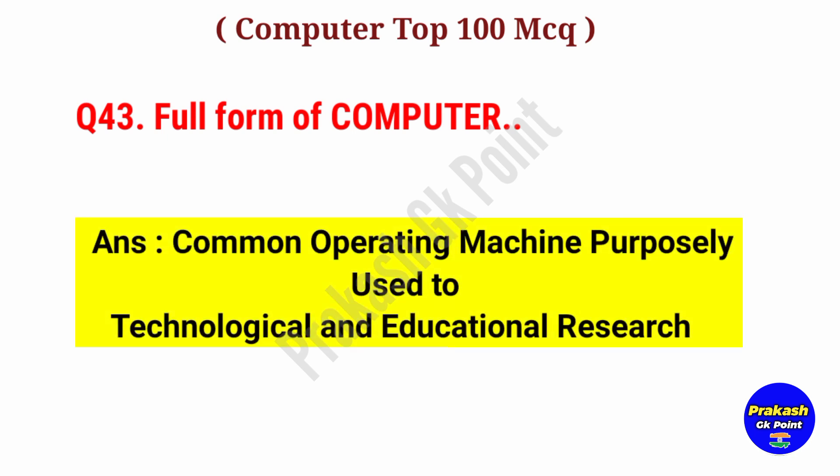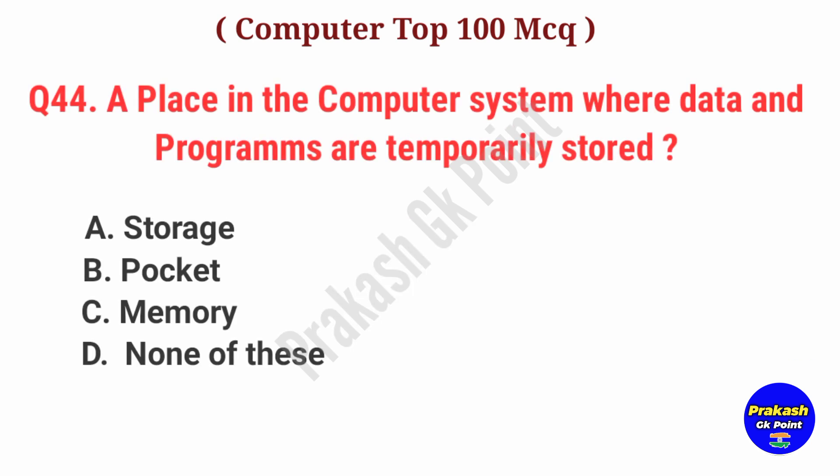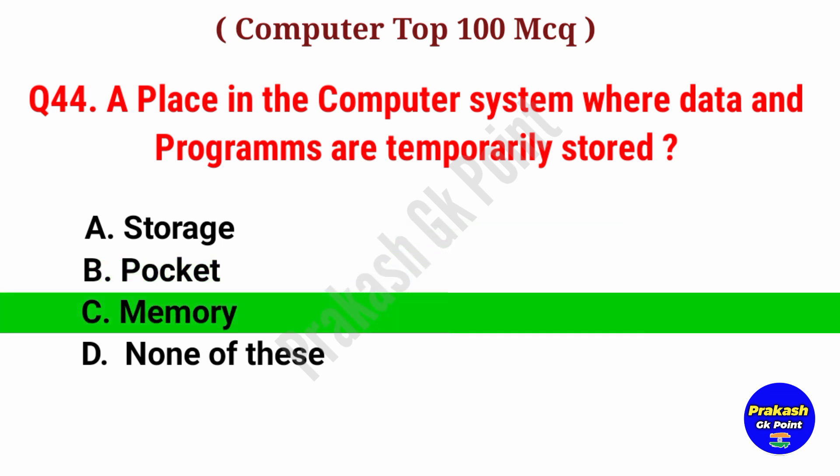Full form of Computer. Answer: The full form of computer is Common Operating Machine Purposely Used for Technological and Educational Research. A place in the computer system where data and programs are temporarily stored. Answer: Option C, Memory.